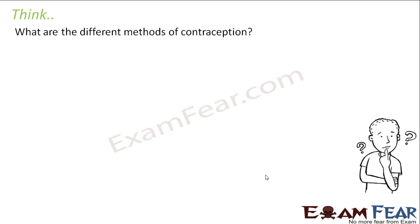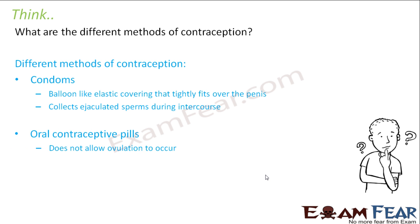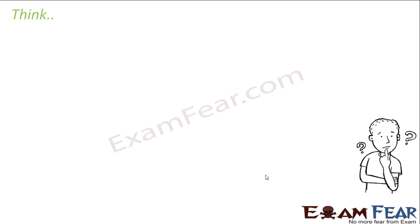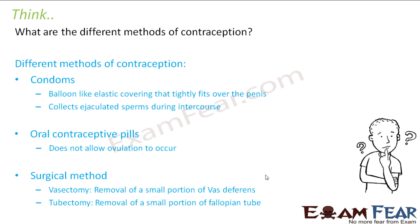What are the different methods of contraception? Contraception means avoiding pregnancy. Some methods are: condoms, oral contraceptive pills, and surgical methods. With condoms, it covers the penis so the sperms which are ejaculated get collected by the condom and are not able to reach the female body, avoiding pregnancy. With oral contraceptive pills, it stops ovulation — for as long as you take these pills, ovulation will not occur; since there is no egg, even if sperm enters the female body there will be no fertilization and no pregnancy.